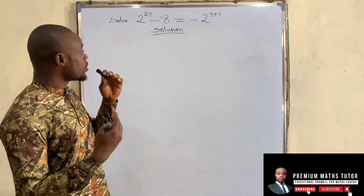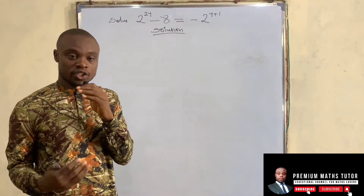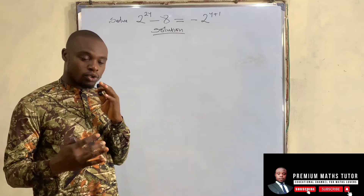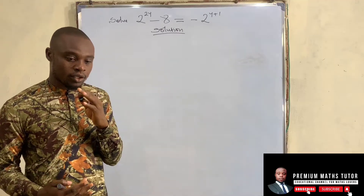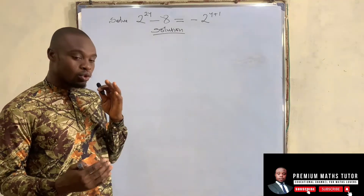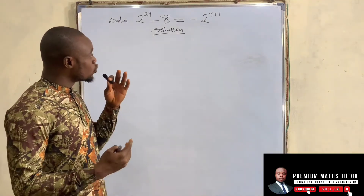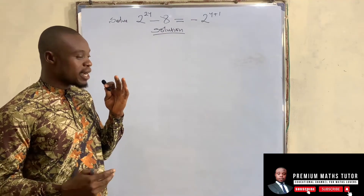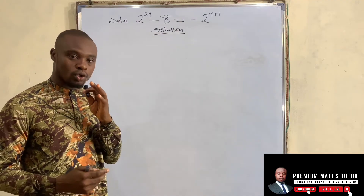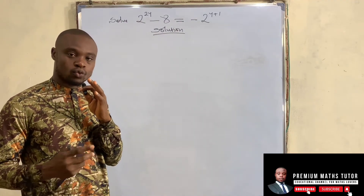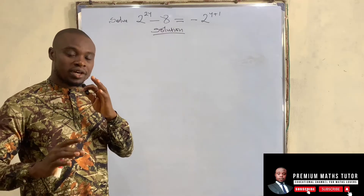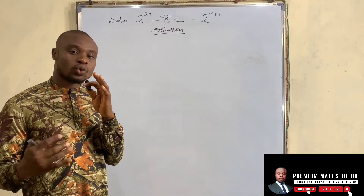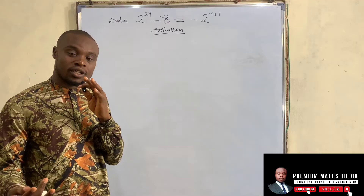Hello guys. This is an exponential equation on the board that I want to explain. The question is 2 to the power of 2y minus 8 equals minus 2 to the power of y plus 1. Generally, this is an exponential equation that is going to lead to a quadratic at the end of the day.